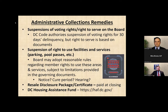We'll talk about both your legal and your non-legal remedies. First I'll touch on the non-legal remedies — your administrative collections remedies. In DC you do have a few that are available to you. Suspension of voting rights or rights to serve on a board of directors: DC Code specifically authorizes a condominium association to suspend the voting rights of members who are delinquent for more than 30 days. For some owners that may mean something; for others it may not, but it is something that can be used to enforce against delinquencies.